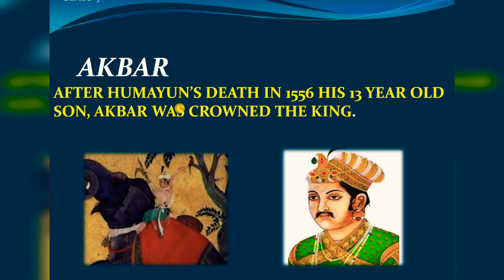Akbar freed himself from the guardianship of Bairam Khan and took the reins of the empire into his own hands in 1560. After resolving the internal issues of the empire, he turned his attention towards the territorial expansion of the empire. Akbar's main point of view was to expand the empire as much as possible across India. On this note, thank you for watching my video — go through each and every part and revise.